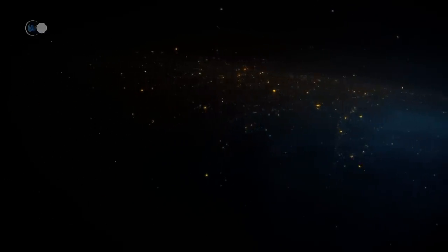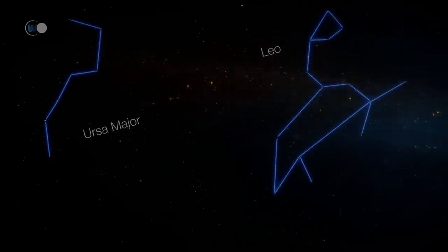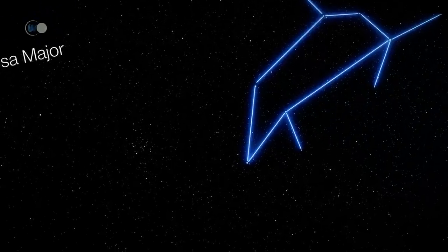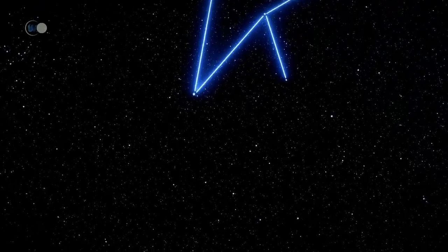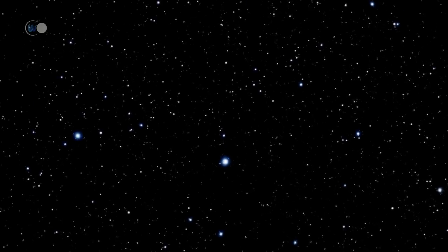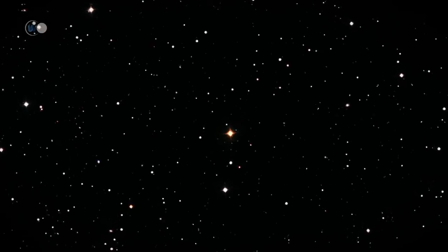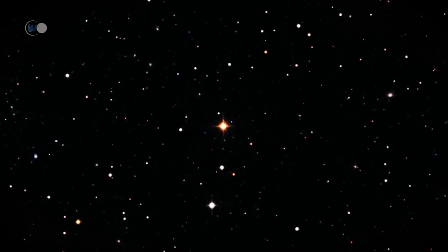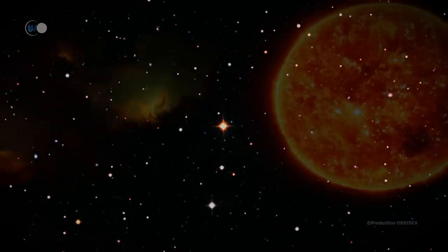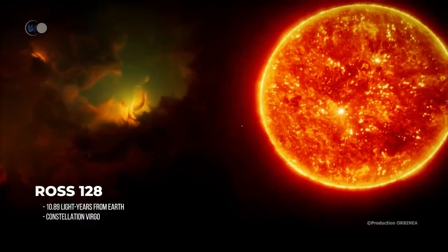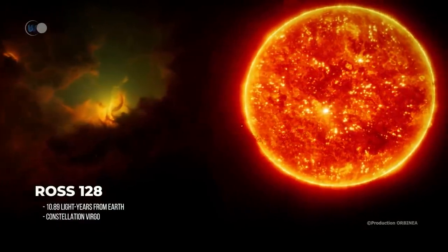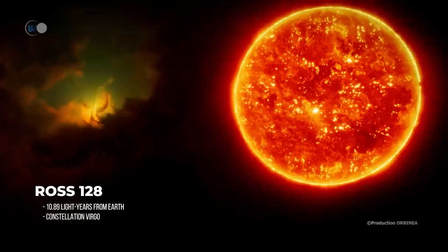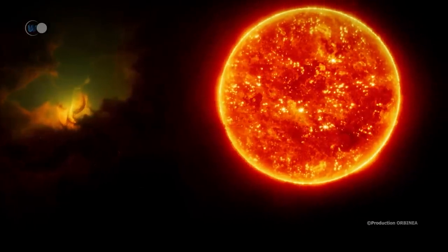Another planetary system, also a little less than 11 light-years away, is located in the zodiacal constellation of Virgo. Let us now approach Ross 128, also named Gliese 447, the 13th closest star system to our Sun. This star has an apparent magnitude of 11.13. Its luminosity is therefore 100 times too low to be observed with the naked eye from our Earth.